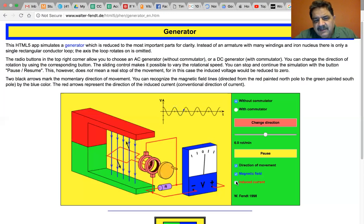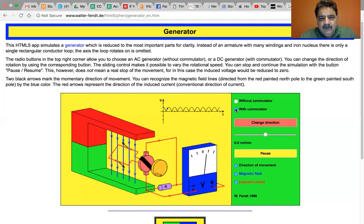It just takes away the little red arrows. But you can see the red arrows change without the commutator. Do they change with the commutator? Looks like they do. No, they don't. They keep going in the same direction.